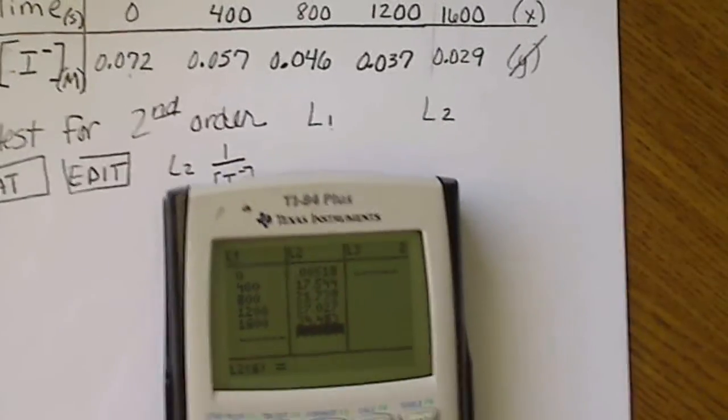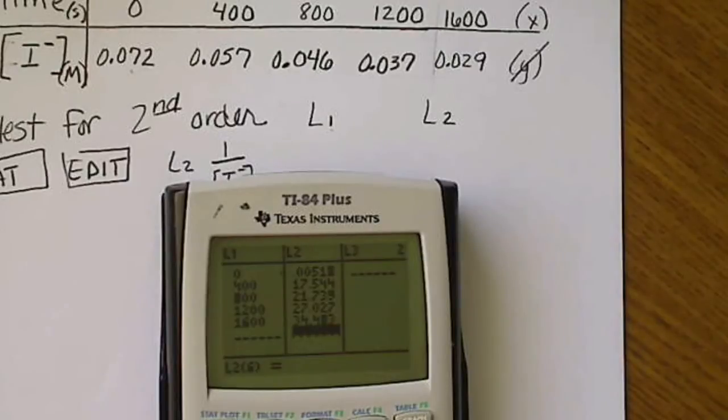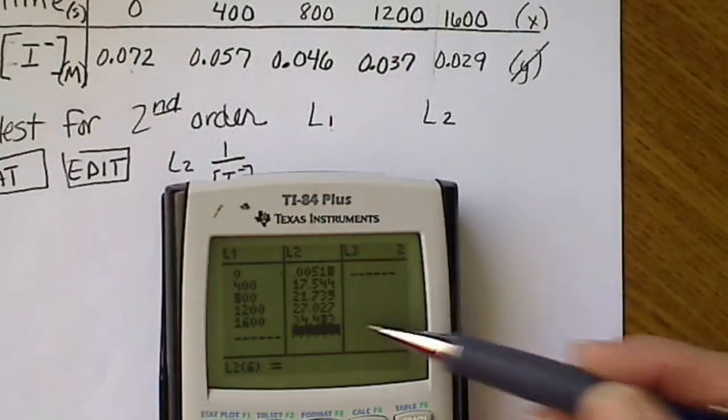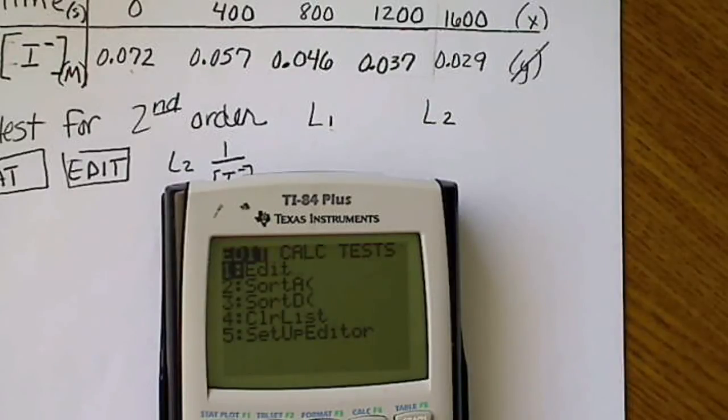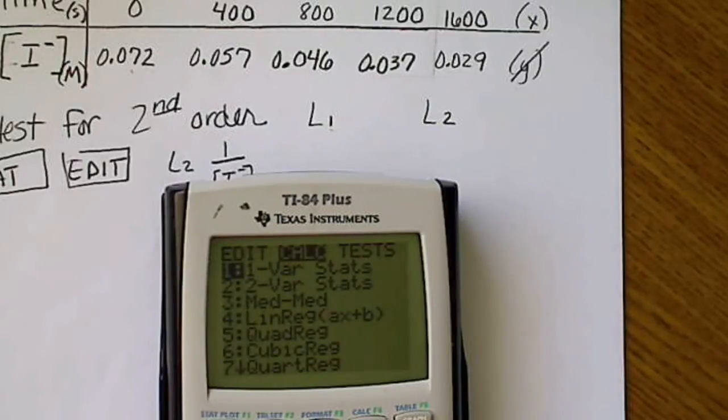So if this gives me a linear equation, then I know I've got second-order kinetics. So I'm going to go to Stat. Now I'm going to arrow over to Calculate, and I'm going to test to see if I have a linear equation. So I'm going to hit number 4.